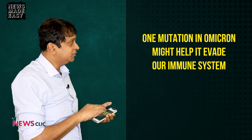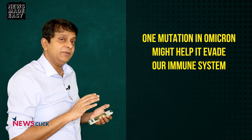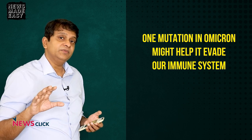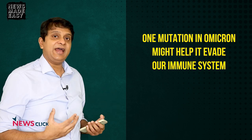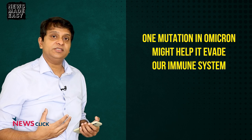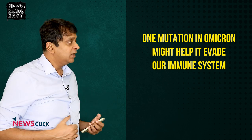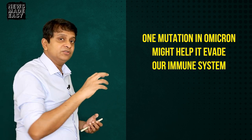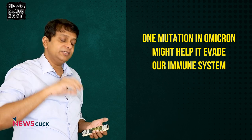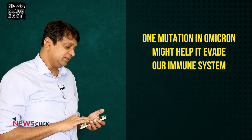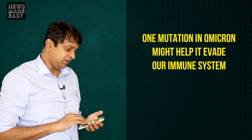One particular mutation being identified is believed to help it evade the immune system. So even if we have antibodies to the coronavirus — to SARS-CoV-2 — it's able to evade them because our antibodies cannot recognize the new spike proteins on this virus.